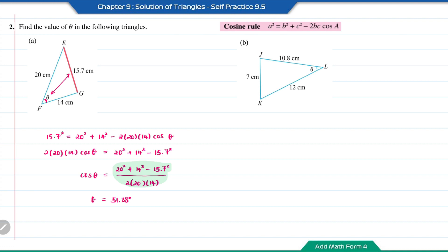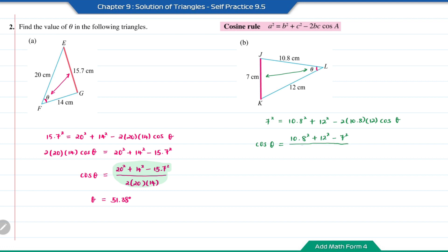Question B: The angle theta is opposite the length JK. Using the cosine rule, this gives 7 squared equals 10.8 squared plus 12 squared minus 2 times 10.8 times 12 cos theta. Using the same method as question A, cos theta equals 10.8 squared plus 12 squared minus 7 squared divided by 2 times 10.8 times 12. So theta equals the inverse cosine of that answer, which is 35.26 degrees.